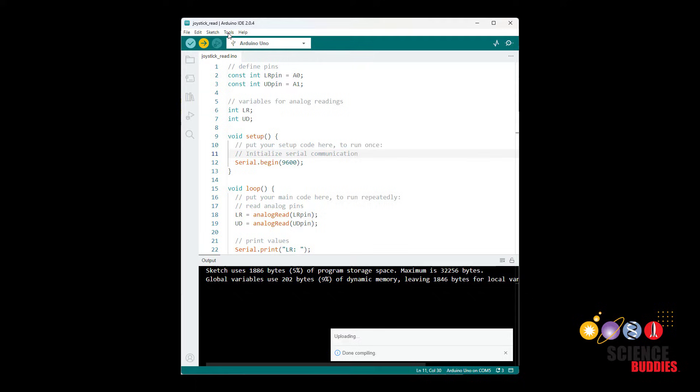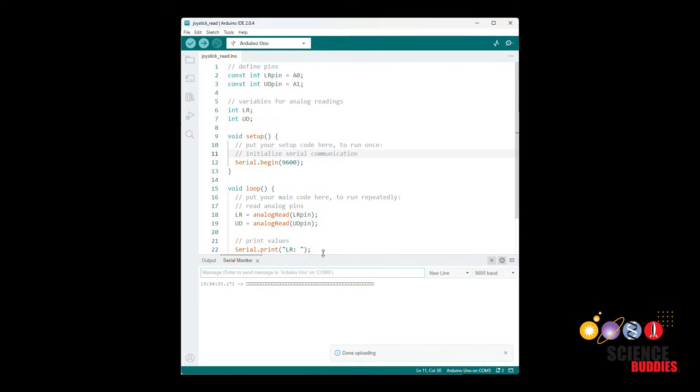So if I upload the code and then open the serial monitor we should see the values from the joystick printing out.